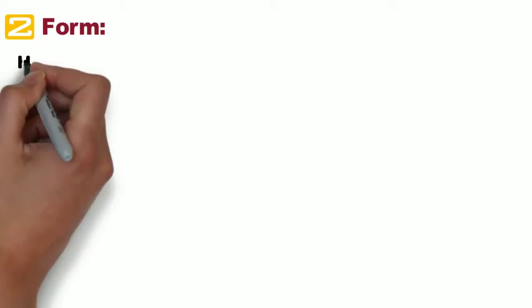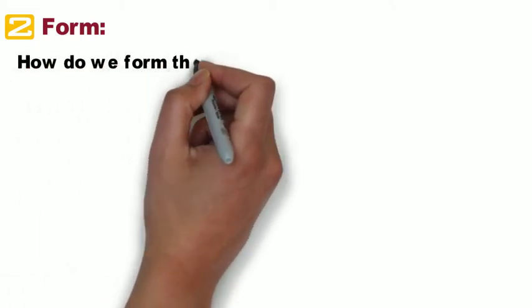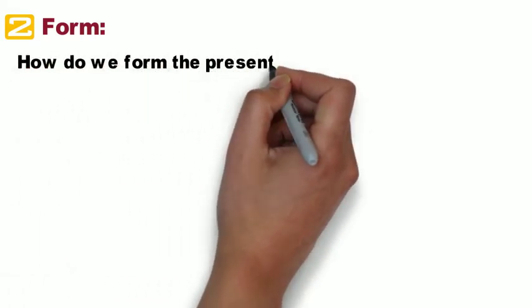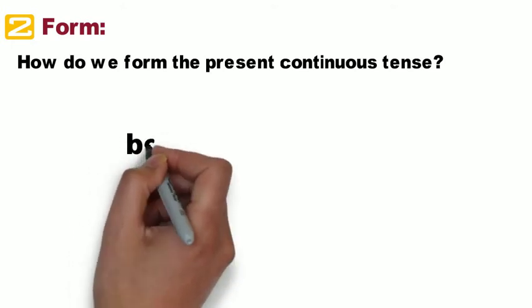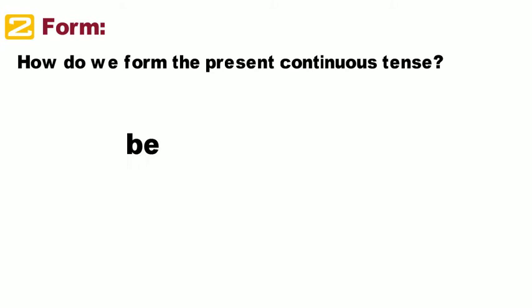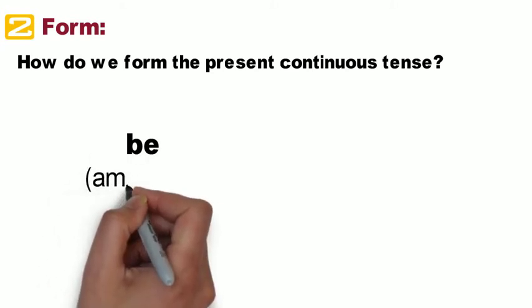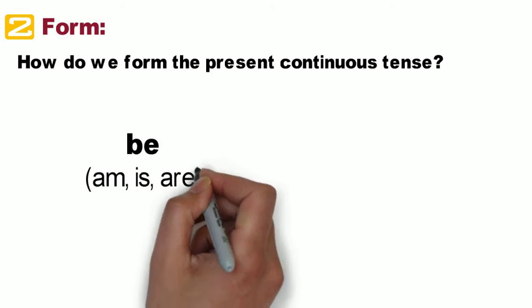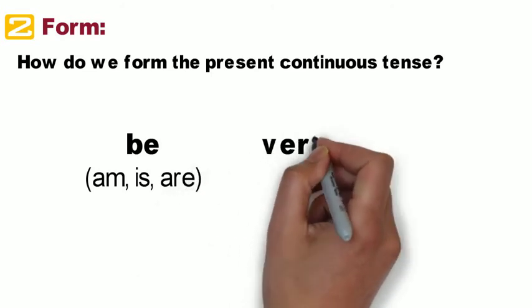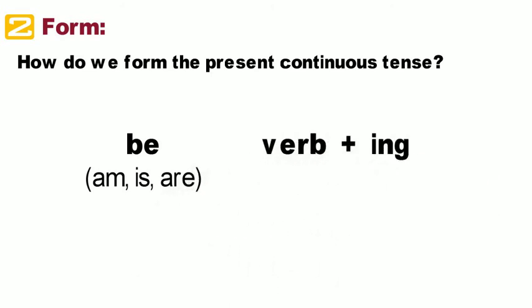So, how do we form the present continuous tense? The present continuous tense has two parts: the helping verb "be," which is am, is, and are, and a verb plus -ing.